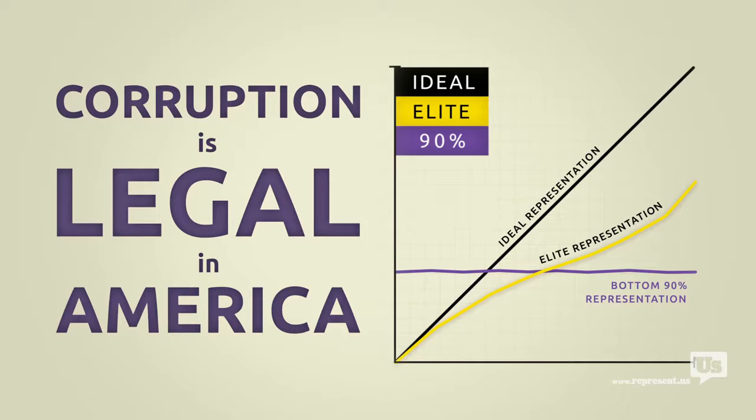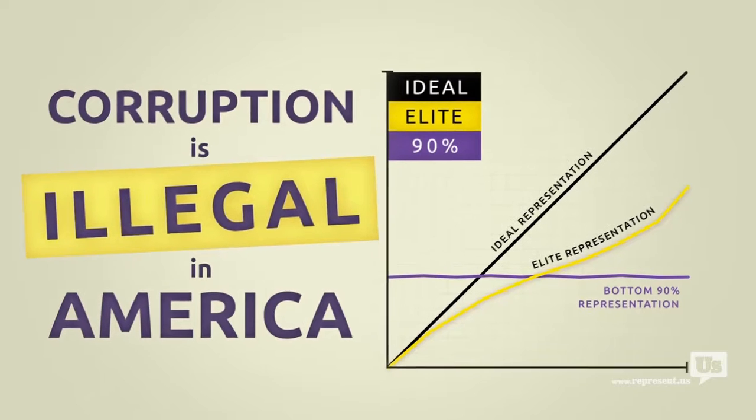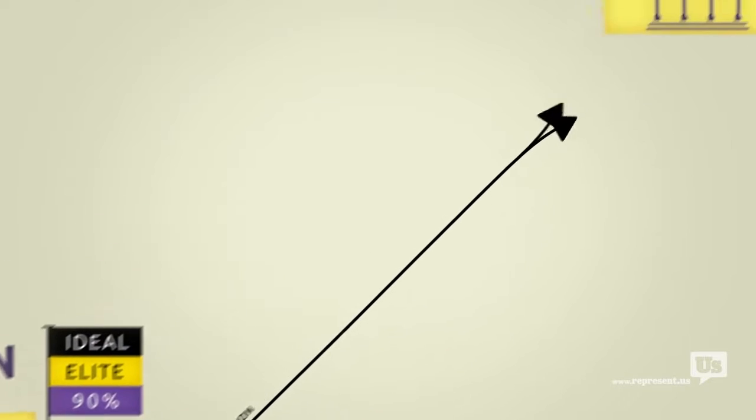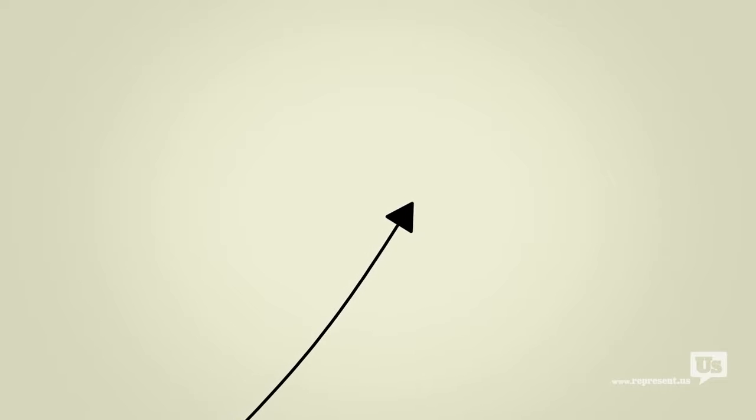And as long as it is, anyone who can spend money to buy political influence will. The solution here isn't rocket science. Make corruption illegal. We already know Congress won't do it. I mean one look at this chart will tell you that. What we need is a plan that lets us go around Congress and do what the American people do best: fix this mess ourselves.